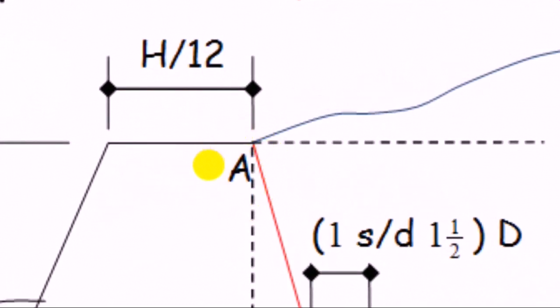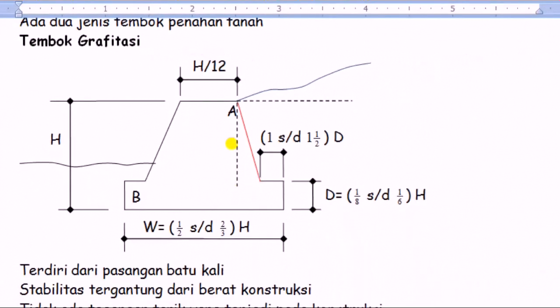Titik A ini akan menentukan koefisien tekanan tanah aktif. Karena kemiringan tembok di belakang ini dengan titik A pegaris vertikal itu akan mendapatkan alfa di sini. Ini akan merupakan sudut yang menentukan berapa koefisien gesek yang terjadi pada dinding belakang ini. Begitu juga kemiringan tanah di belakang dengan horizontal itu akan mendapatkan sudut beta. Jadi titik A ini sangat menentukan.